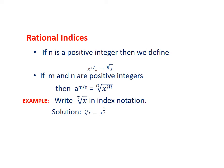Rational Indices: If n is a positive integer, then we define x^(1/n) = nth root of x. If m and n are positive integers, then a^(m/n) can be written as nth root of x^m.